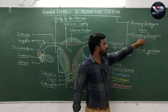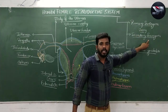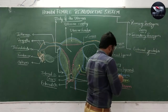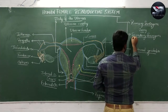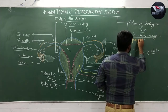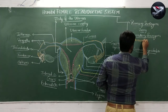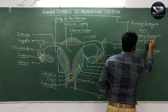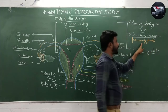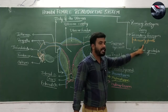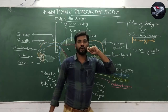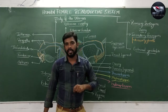The second type of sex organs are the secondary or accessory sex organs. These include accessory glands and accessory ducts. Regarding accessory glands, I will explain in the next lecture. Accessory glands generally include vestibular glands and mammary glands.